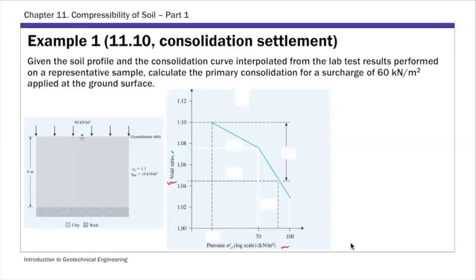So for the first one, we have clay, and you're adding load on top — a delta sigma prime. You're adding 60 kilonewton per meter squared surcharge on top, and that will induce consolidation. We have initial void ratio and then the saturated unit weight. In this example, we're going to use directly this e log sigma prime curve to calculate consolidation.